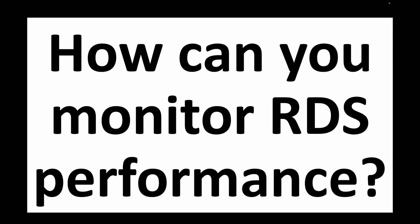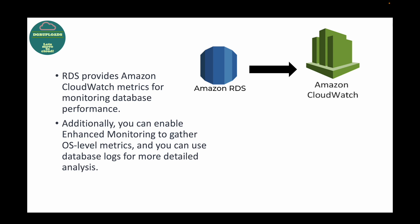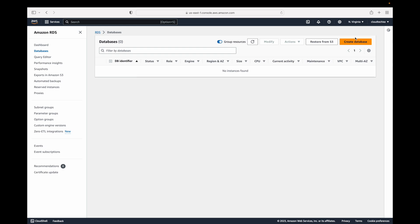The next question is: how can you monitor your RDS performance? In AWS, CloudWatch is the service we use for monitoring. RDS has integration with Amazon CloudWatch metrics for monitoring DB performance. In addition to that, you can also enable enhanced monitoring. With CloudWatch you get basic and detailed monitoring — the detailed option is your enhanced monitoring.